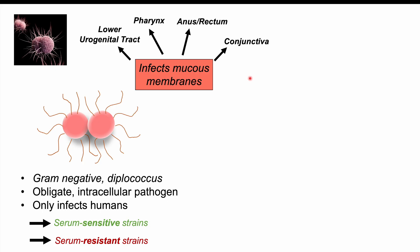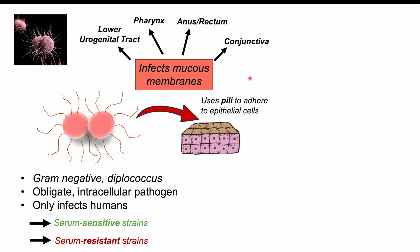When exposed to these bacteria through sexual contact or vertical transmission, the bacteria will try to adhere to your cells using what are called pili — hair-like strands that come off the organism. They use these pili to adhere to epithelial cells and to move around from cell to cell. The epithelial cells most commonly affected are the cuboidal and columnar epithelial cells.